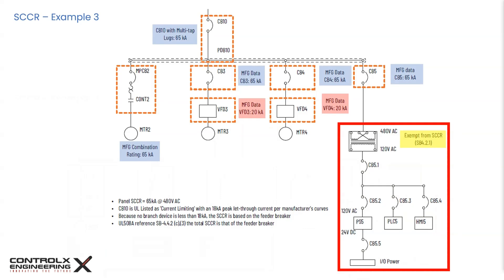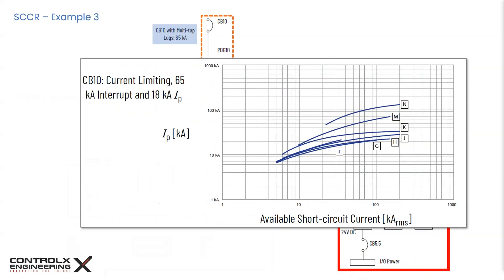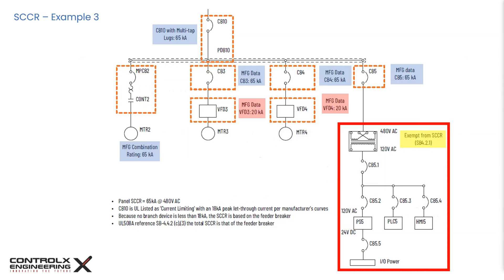In the third example, CB10 is UL listed as current limiting with an 18 kA peak let-through current per manufacturer-provided curves. The let-through current is the maximum instantaneous or peak current that passes through a protective device. Since all downstream devices have ratings exceeding the 18 kA peak let-through current, the overall SCCR is based on the feeder breaker. Therefore, per paragraph SB 4.4.2, the panel SCCR is 65 kA at 480V.